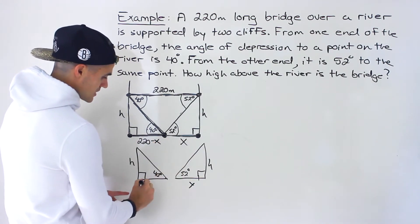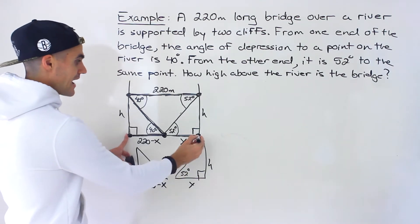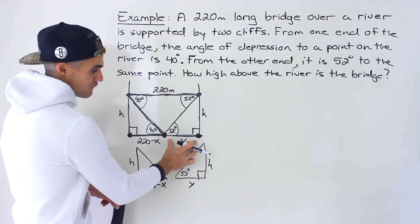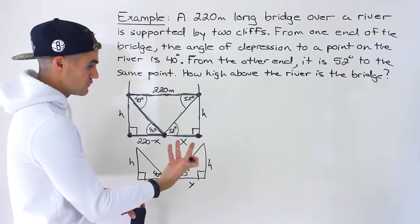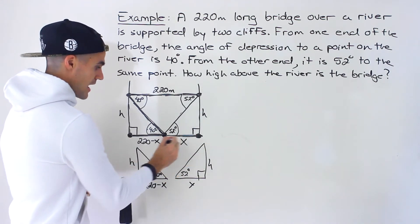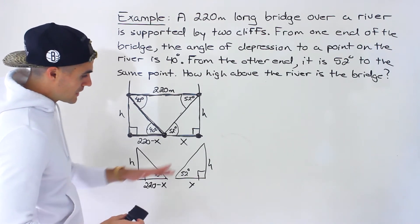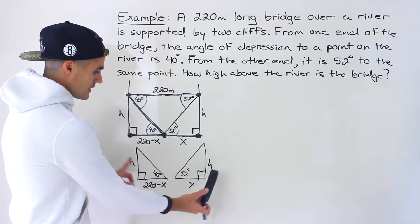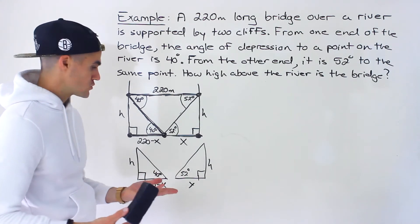So if this is X, then this other length is 220 minus X because the entire total is 220. For example, if X were 50 meters, this length would be 220 minus 50. Now we have two triangles sharing the same variables X and H, so we can set up two equations and solve for those two unknowns.